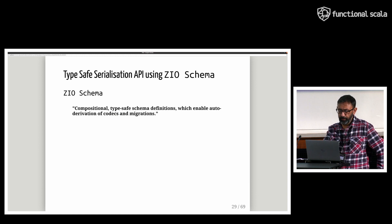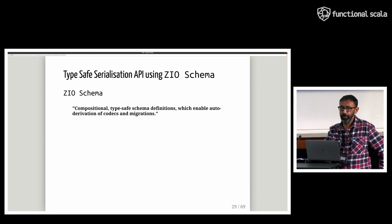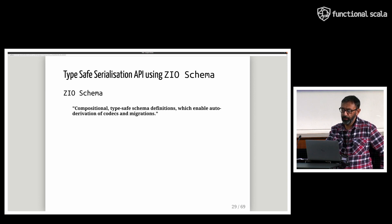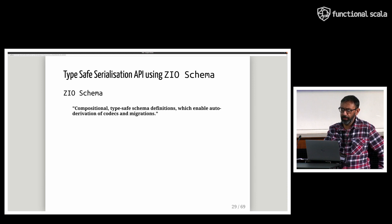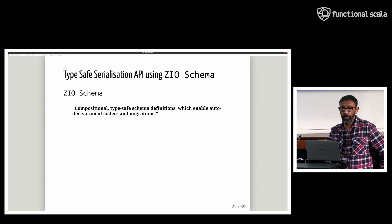ZIO Schema came to the rescue, which — to quote the readme — offers compositional type-safe schema definitions which enable auto-derivation of codecs and migrations. Let's see what it looks like in user code and how we used it in the library.